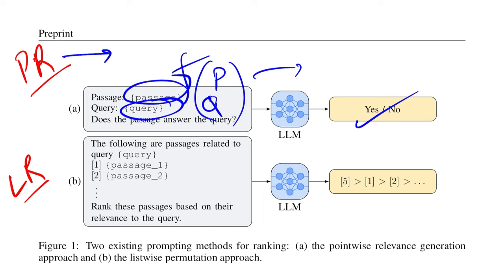Whereas listwise ranking approach takes in a query and a list of candidate passages. Now the idea is we want to rank all of them relative to each other such that the one that occurs first is most relevant to the given query.